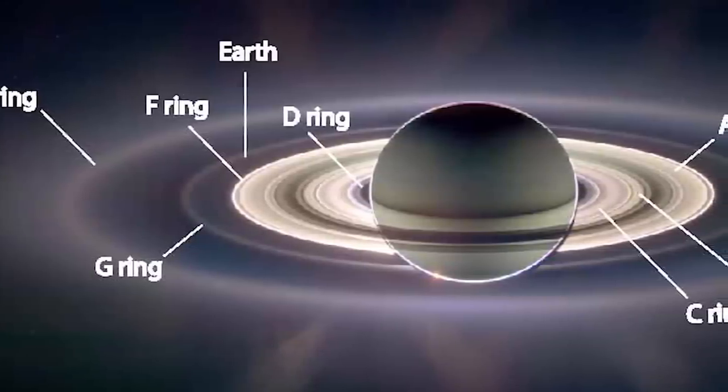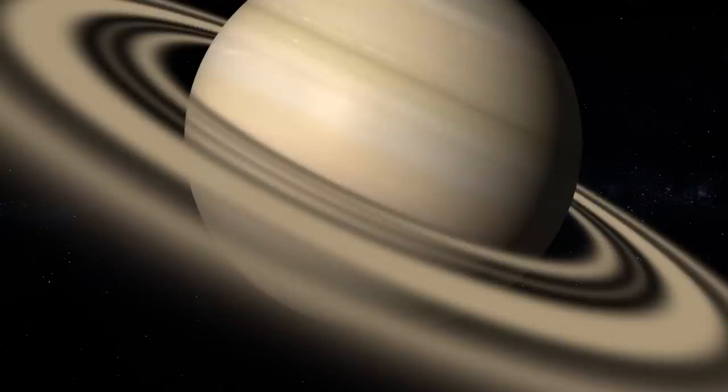Their thickness is estimated to be between 5 meters or 16 feet and 20 meters or 66 feet only. The A ring, the largest of the three, has two gaps near its outer edge and a multitude of large-scale dynamic structures.